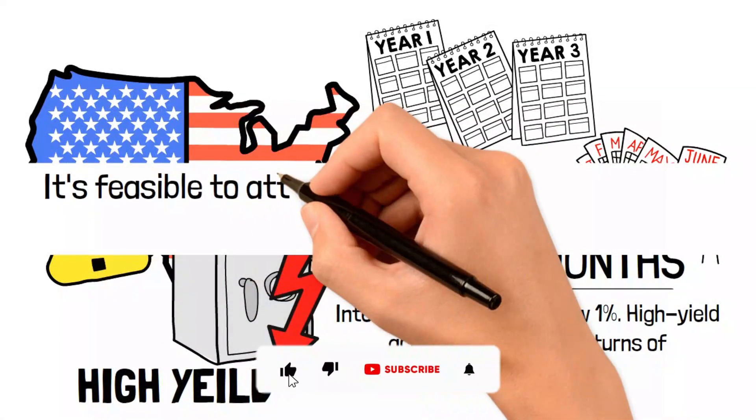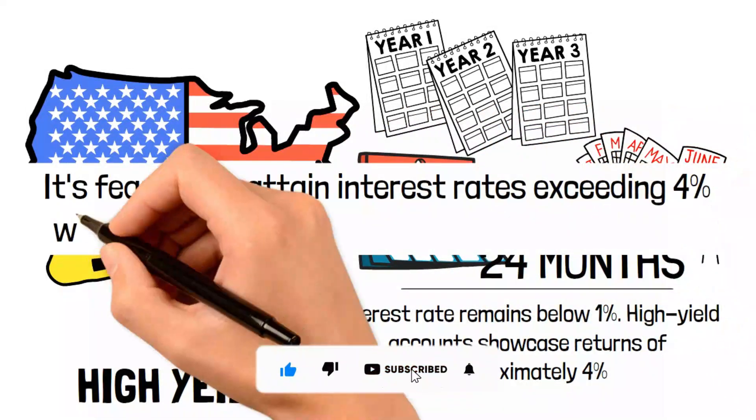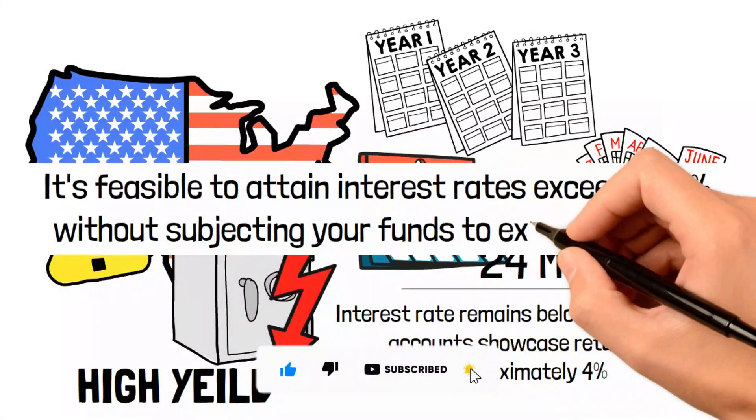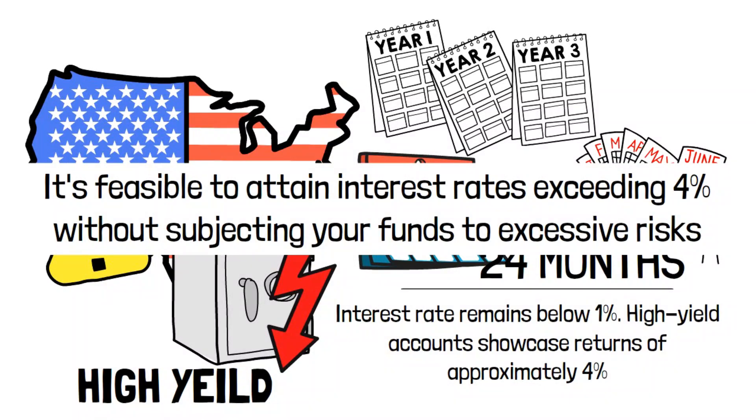However, specific high-yield accounts showcase returns of approximately 4 percent, a noteworthy improvement from the past, although still lagging behind inflation. Surprisingly, it's feasible to attain interest rates exceeding 4 percent without subjecting your funds to excessive risks. This transition can be truly transformative.